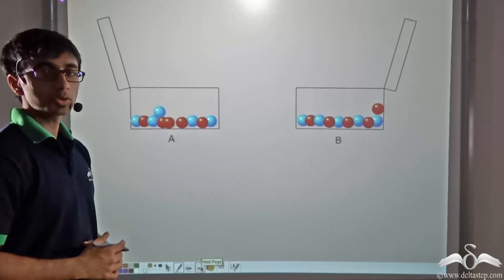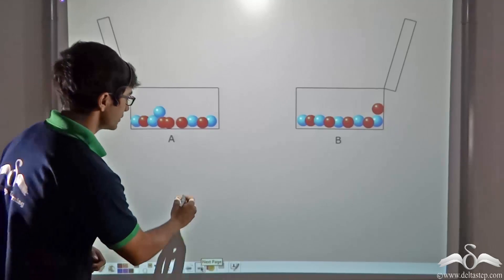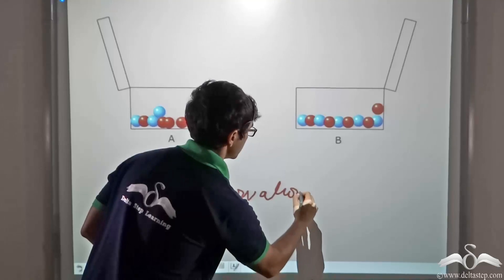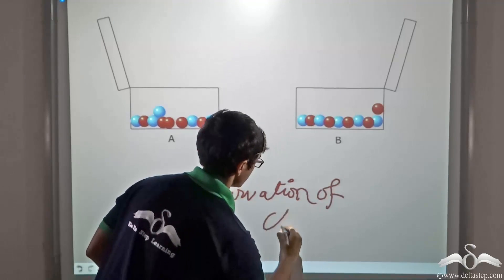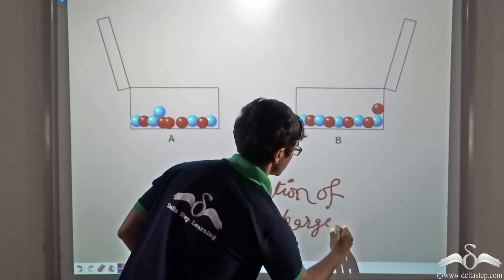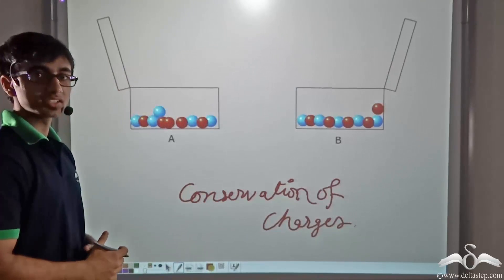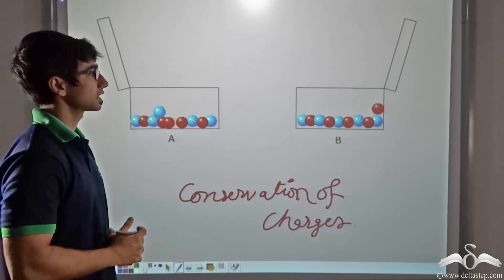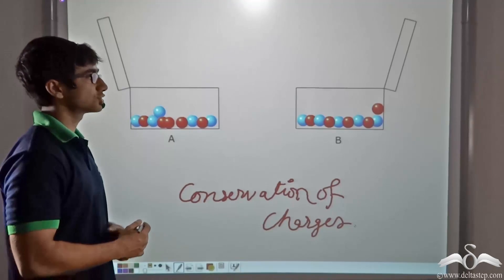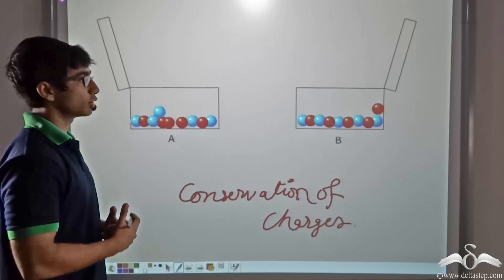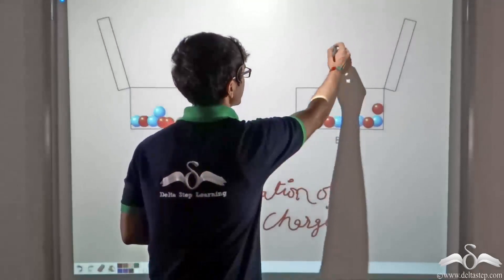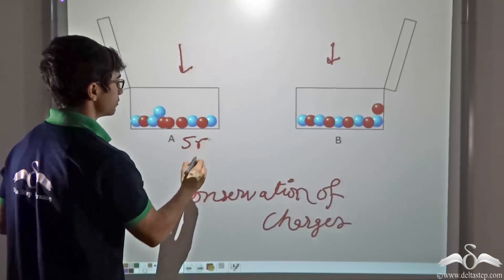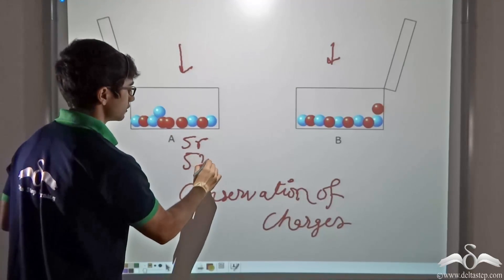We will now learn about a very important concept: the conservation of charges. To illustrate this concept, we have considered an example using two boxes with a given number of red balls and blue balls. In box A and B, there are five red balls and five blue balls each.